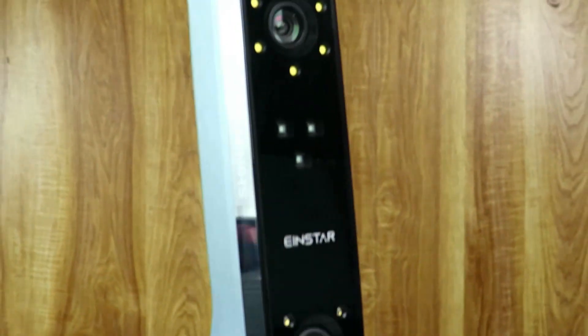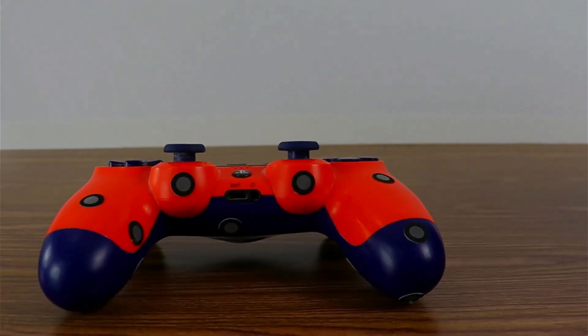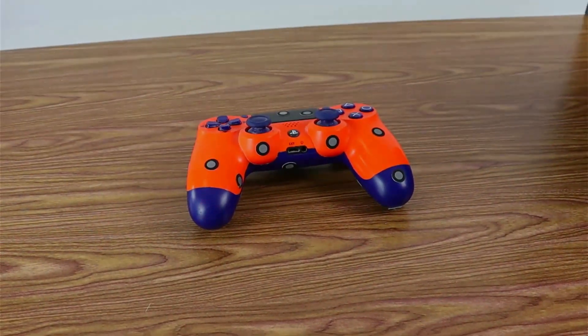Today we're going to see how easy it is to 3D scan an object using Shining 3D's Einstar scanner. We're going to be scanning this PlayStation controller in order to make a mold for the bottom half for a game called Family Feud. This will help the players so they will not have to hold the controller as they play.